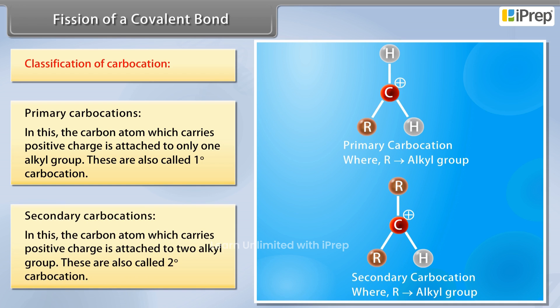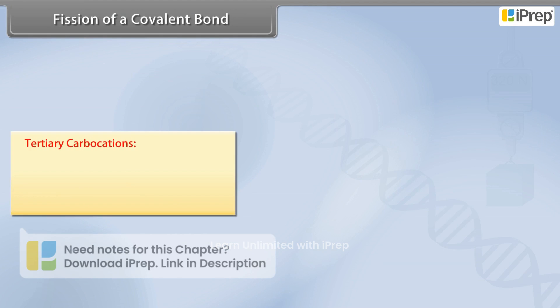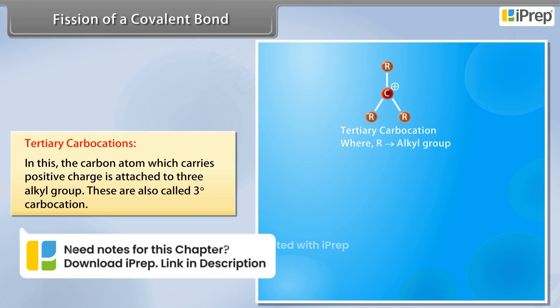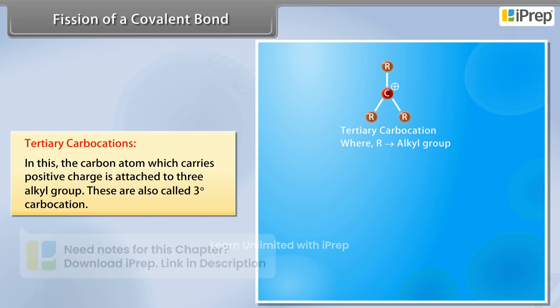Secondary carbocations: the carbon atom which carries a positive charge is attached to two alkyl groups. These are also called two-degree carbocations. Tertiary carbocations: the carbon atom which carries a positive charge is attached to three alkyl groups. These are also called three-degree carbocations.